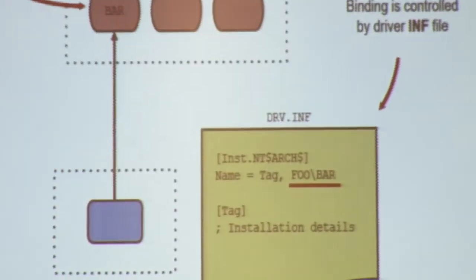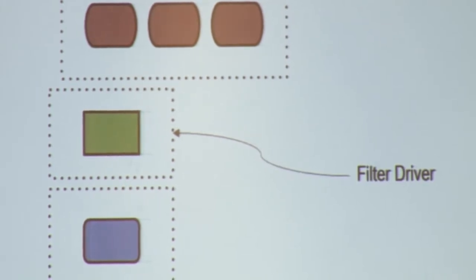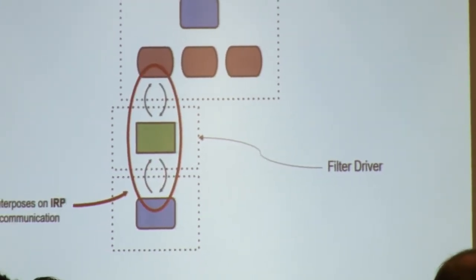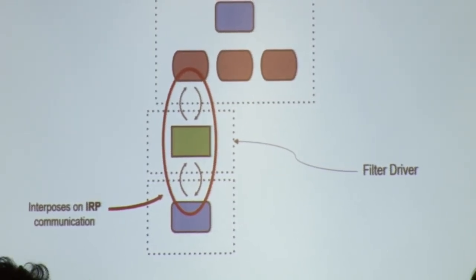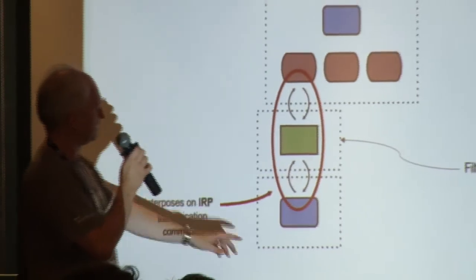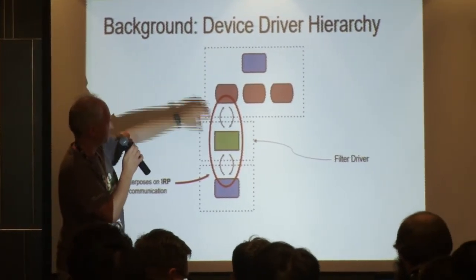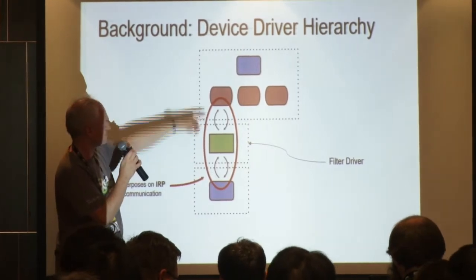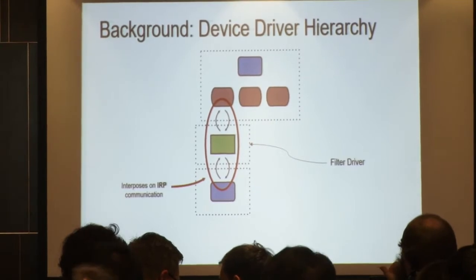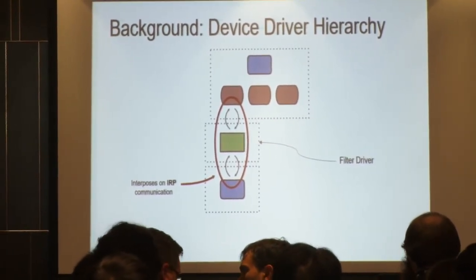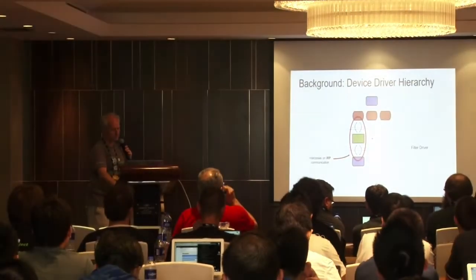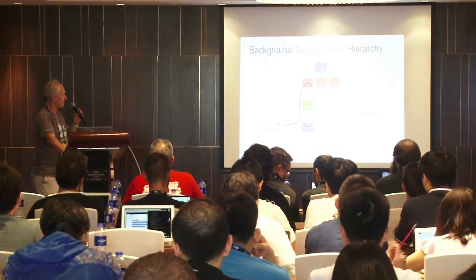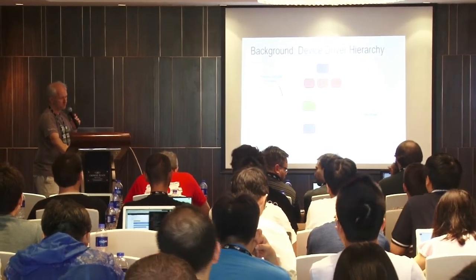Filter device objects interpose between function device objects and physical device objects. There's a communication mechanism called IRPs — I/O Request Packets. When the function driver needs its bus driver to do something, it sends an IRP up to the bus driver. The filter driver can interpose on these via the filter device object — it can complete them straight back, forward them with modifications, or modify results on the way back. Filter device objects are installed by means of registry keys — either by class or by name.